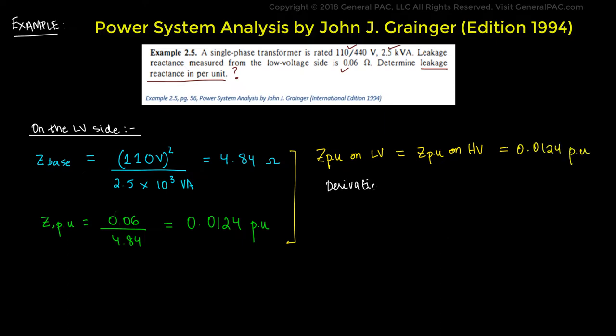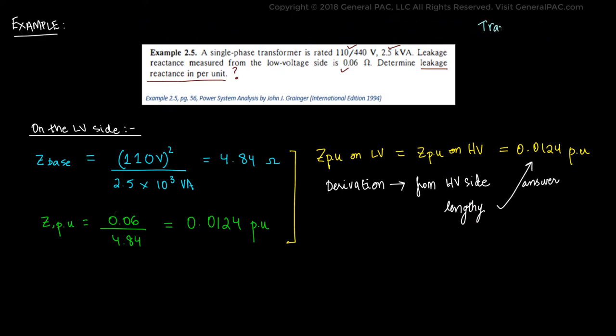And because of our derivation early in the video, we know that if we calculate it by using the impedance referred from the high voltage side, the calculation would be lengthy but results is exactly the same. This concludes that if we want to analyze the transformer, we would simply calculate the per unit impedance on either side of the transformer.